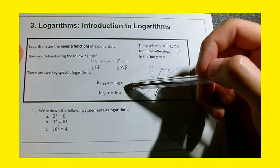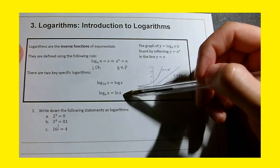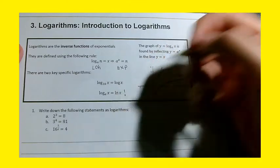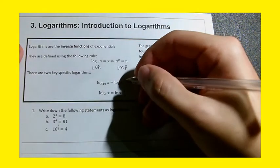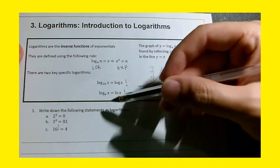At A level, whenever you see log x written on its own, that always means log base 10 x. And whenever you see ln x, that always means log base e x. This is a special case. So this is like a special type of log. So these are quite important for you to understand. Whenever you see log x, it's base 10. Whenever you see ln x, it's base e.